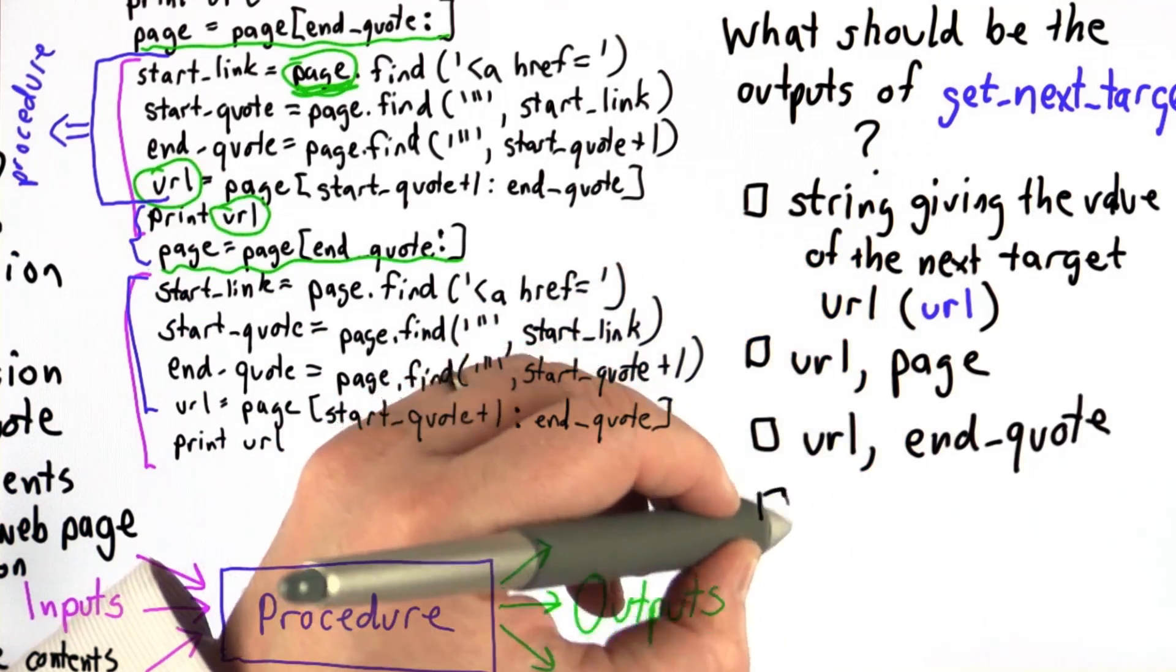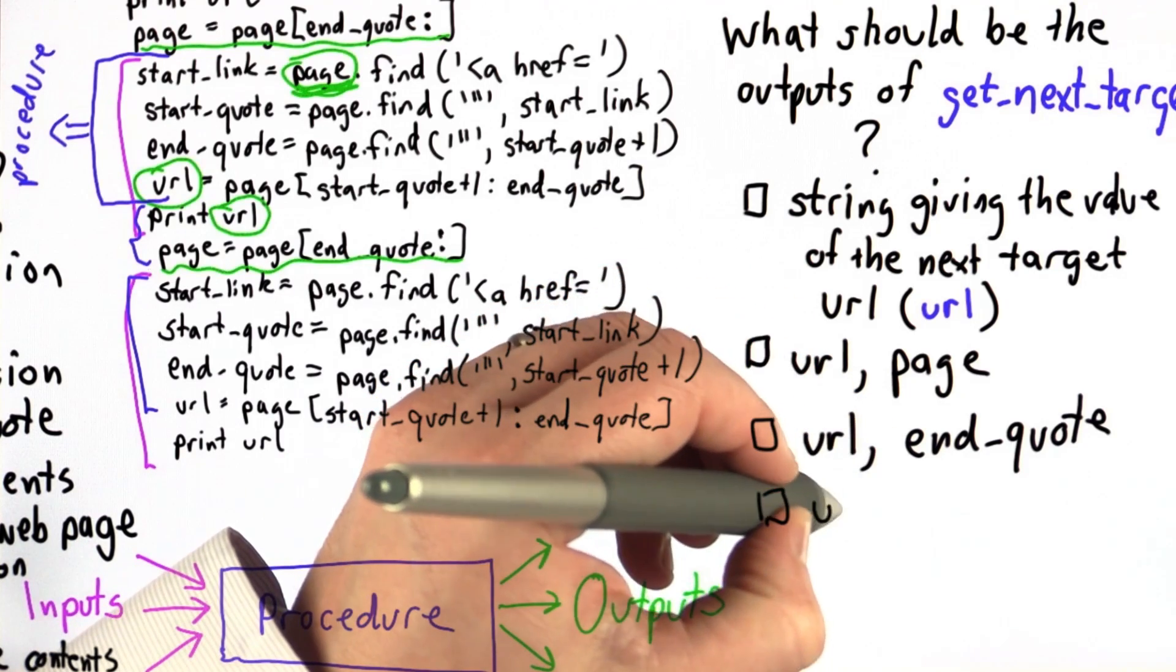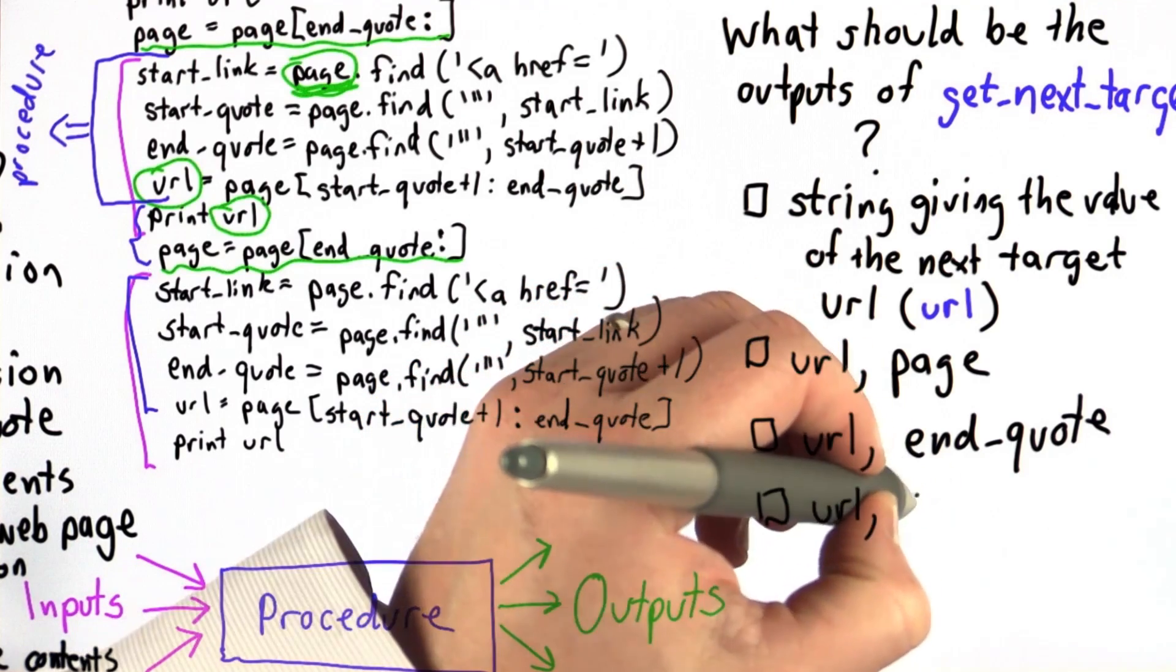And the fourth choice is to output the value of URL as well as the value of start link, the position where we find the beginning of the link.